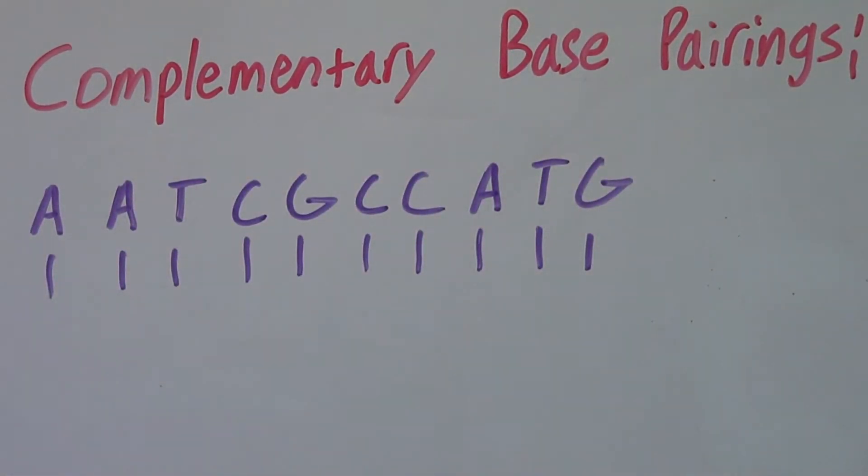Let's say we have one strand of DNA that looks like this. These letters here represent the four bases of DNA. Those four bases are A, T, G, and C.